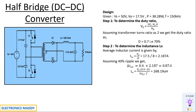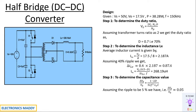Once we know the value of LX, our next step is to determine the capacitance value. Delta Vout / Vout = (1 − 2D) divided by (32 × F² × LX × C). Substituting a voltage ripple of 5 percent, you'll be getting the value of C as 41.42 nanofarad. So this completes our design procedure.